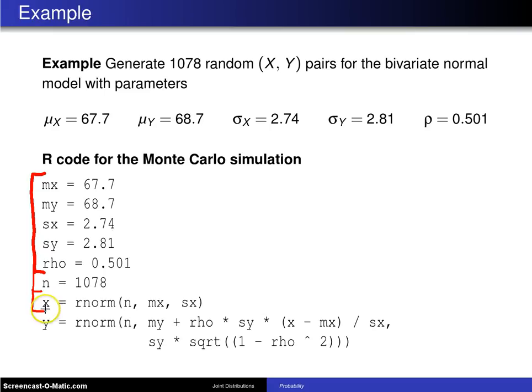That is to say, 1078 values are generated from the marginal distribution for X. Then this last statement here generates, again, 1078 Ys, but this time they are generated from the appropriate conditional distribution. Now we have the XY pairs.